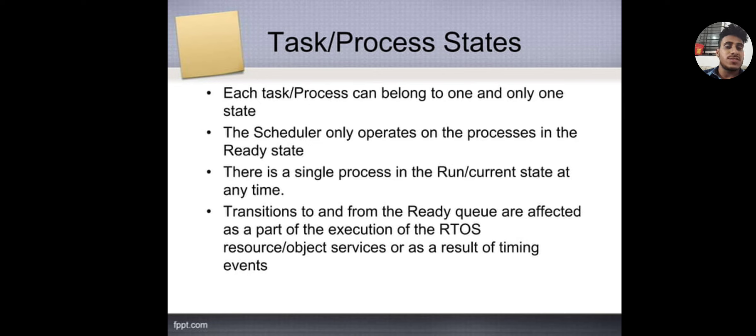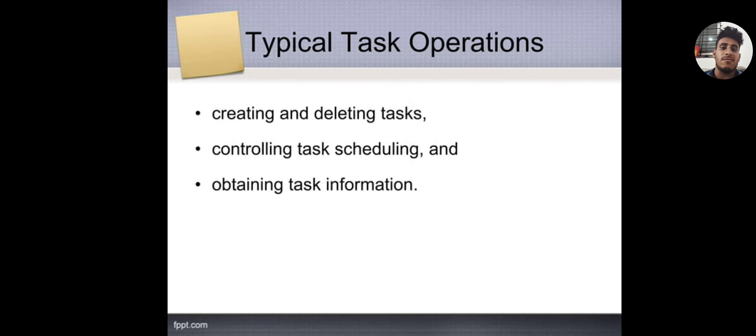Task and Process states: Each task can belong to one and only one state. The scheduler only operates on the processes in the ready state. There is a single process in the run current state at any time. Transitions to and from the ready queue are effective as a part of the execution of the RTOS resource object services or as a result of timing units.